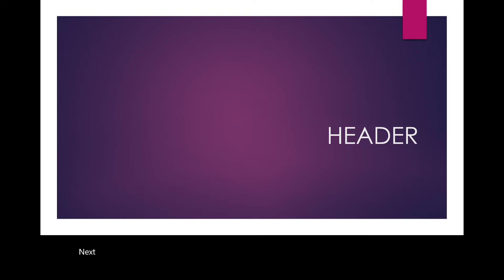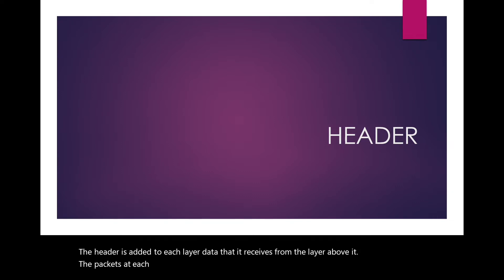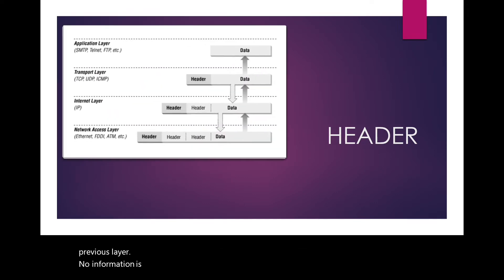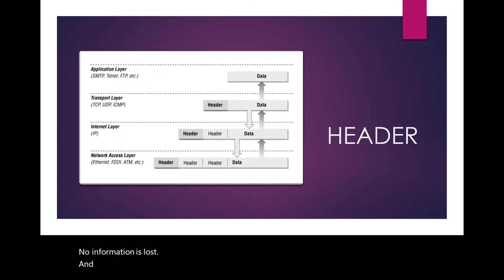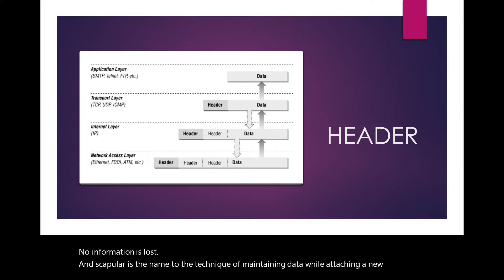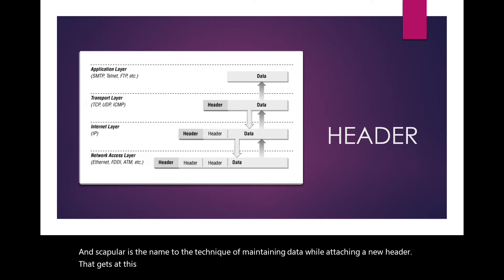Next is the header. A header is added to each layer's data that it receives from the layer above it. The packets at each layer contain all of the information transmitted from the previous layer — no information is lost. Encapsulation is the name given to the technique of maintaining data while attaching a new header. Packets at this level only contain data to be transferred, for example, part of a file being transferred during an FTP session.